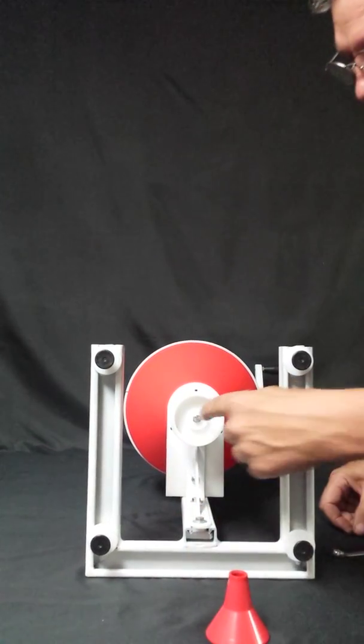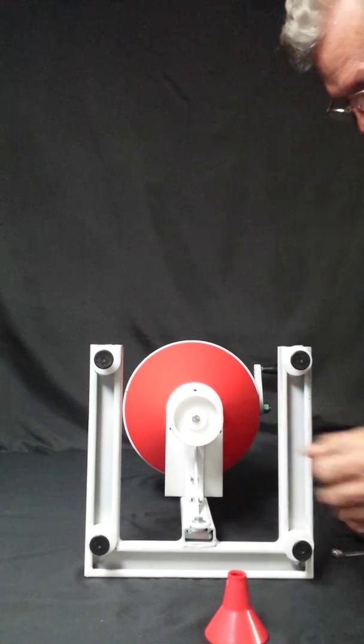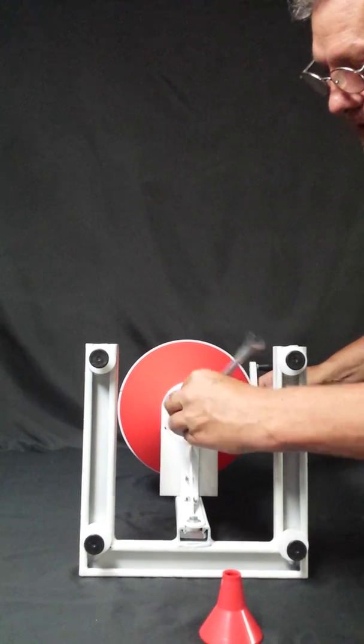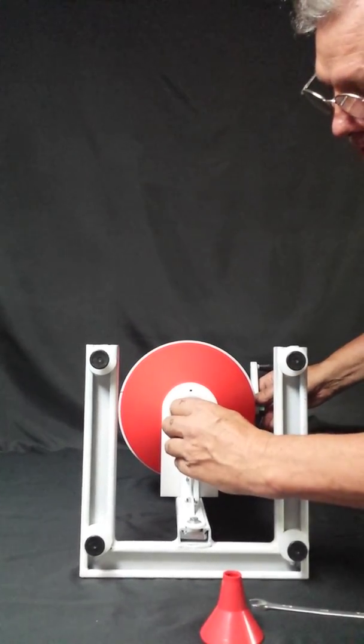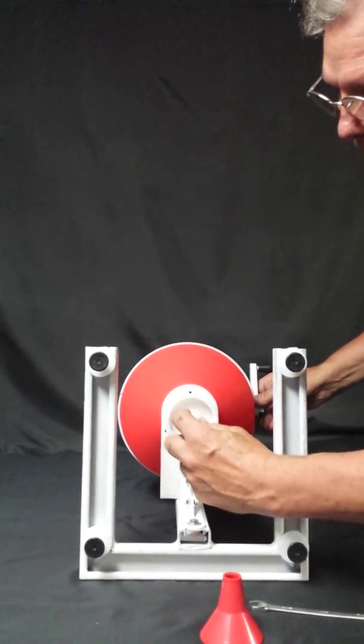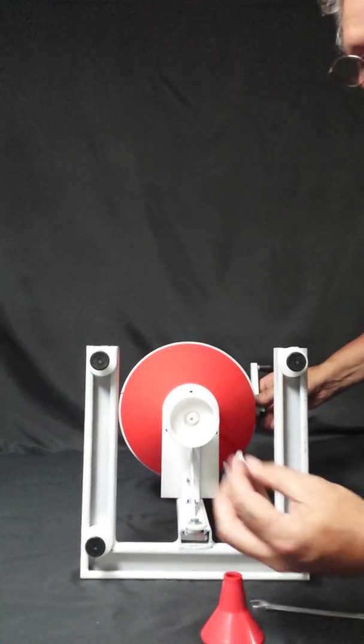Take this funnel out, remove that bolt, hold the auger handle so that it doesn't turn on you, remove that bolt, and remove the spinner plate.